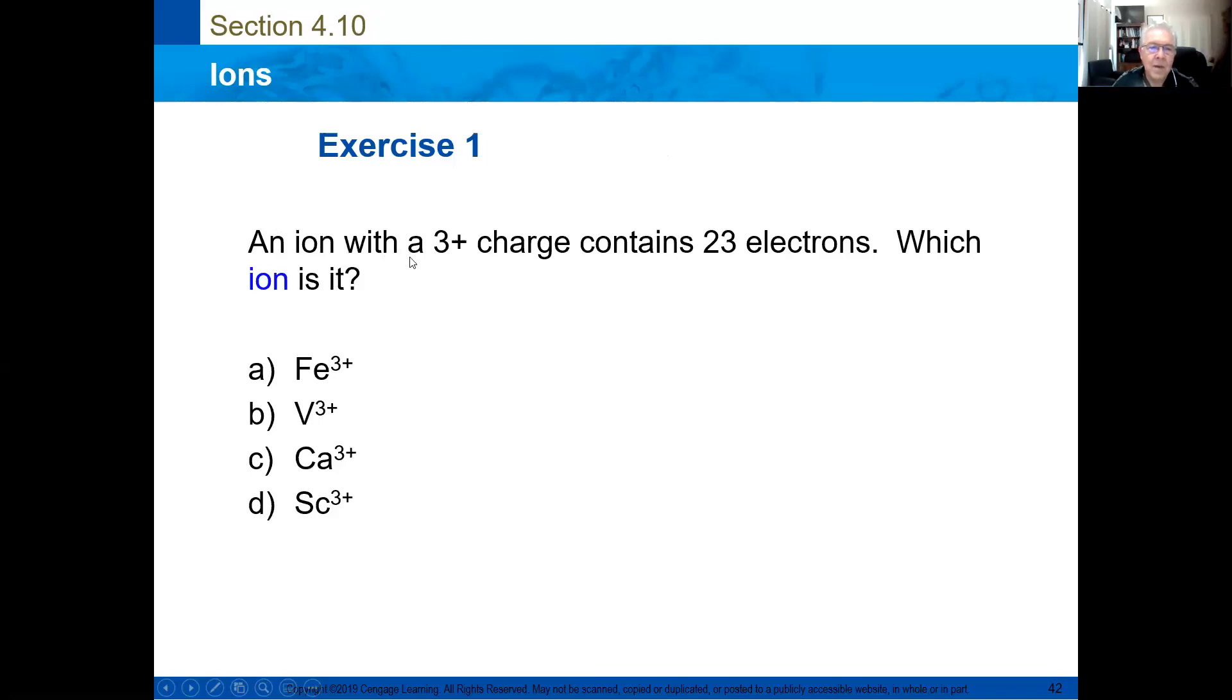Exercise. An ion with a positive three charge contains 23 electrons. Which ion is it? Well, first of all, you have to go to the periodic table and see the element. If they have 23 electrons and the charge is plus three, it's because it has lost three electrons. Then three plus 23 is 26 protons. That's the atomic number. What is the element with atomic number 26? Iron.